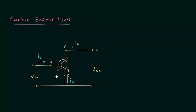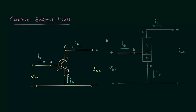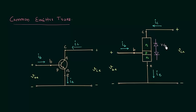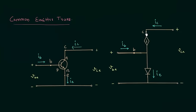Instead of using the transistor symbol we will represent the transistor itself, which helps us visualize things more clearly. We can consider the transistor as two diodes connected back to back. One diode is reverse biased and the other is forward biased. In the modified circuit, the collector branch will have a dependent current source and the emitter branch will have the forward biased diode.